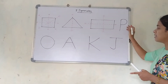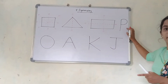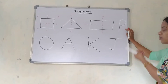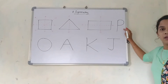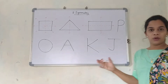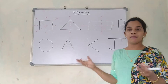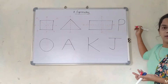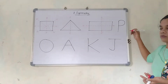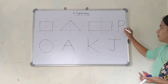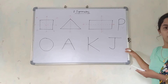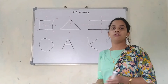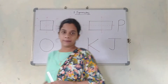Can you tell me — is P symmetrical? This is the alphabet P. Can I draw any axis of symmetry through P and get two equal parts? No, I cannot. However I want to divide this P, I cannot get two equal parts. So this is not a symmetrical object. If it is not a symmetrical object, there will be no axis of symmetry.